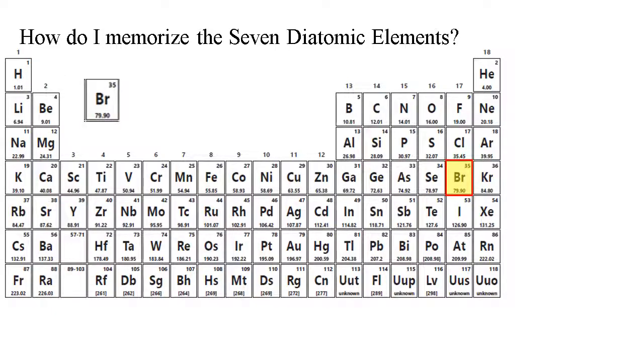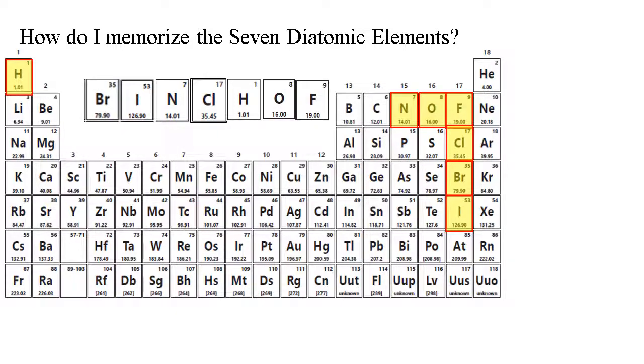Bromine is the first diatomic element, followed by Iodine, Nitrogen, Chlorine, Hydrogen, Oxygen, and Fluorine.